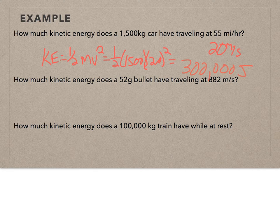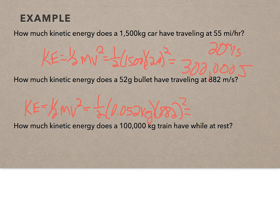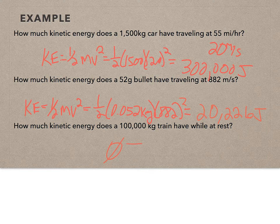A bullet of 52 grams (0.052 kg) traveling at 882 m/s: KE = 0.5 × 0.052 × 882² = 20,226 joules. Note: always convert grams to kilograms. Less than a car, but still a frightening amount of work it can do. A 100 kg train at rest has no velocity, no speed, and therefore zero kinetic energy.